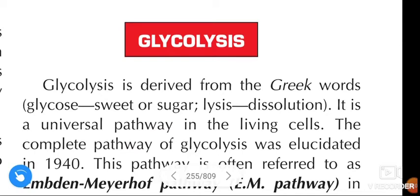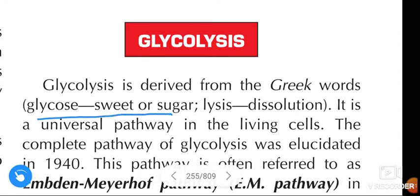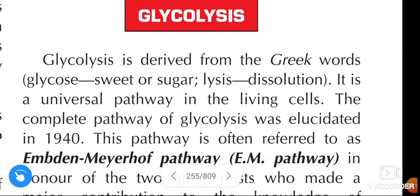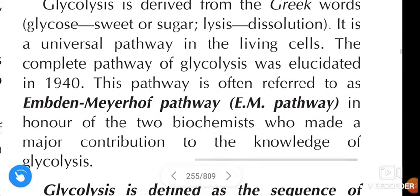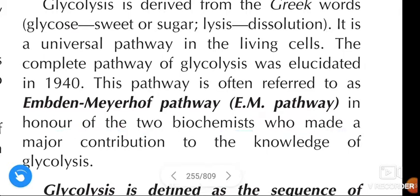In this video we are going to learn about glycolysis. Glycolysis is derived from the Greek words: glycos means sweet or sugar, and lysis means dissolution. It is a universal pathway in living cells. The complete pathway of glycolysis was elucidated in 1914. This pathway is often referred to as the Embden-Meyerhof pathway or EM pathway, in honor of two biochemists who made major contributions to the knowledge of glycolysis.